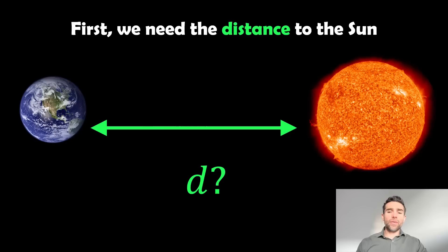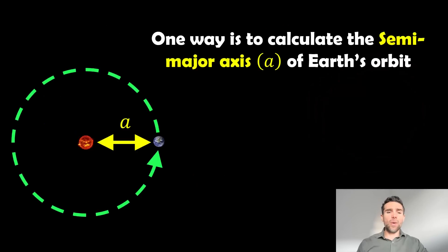In order to calculate the size or the diameter of the Sun, or radius actually because that's just going to be half the diameter, we need to find the distance to the Sun. There's a few different ways you can do that, and I'm going to show you by using the orbit of the Earth.